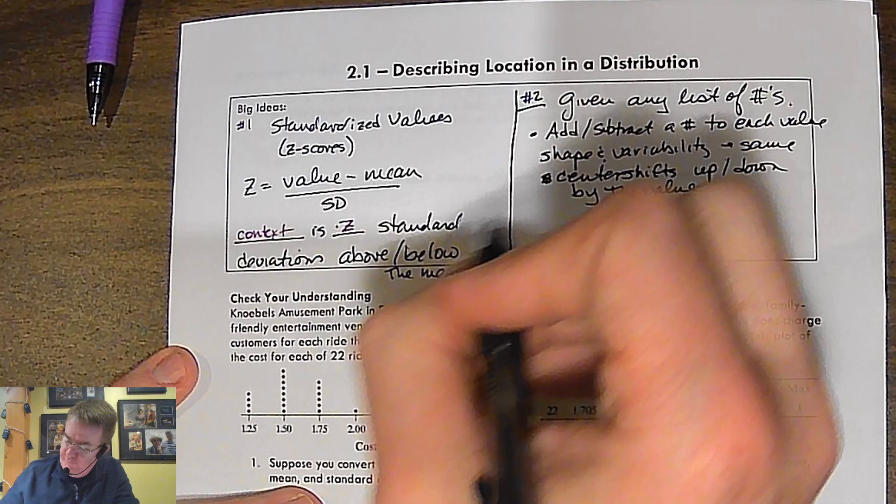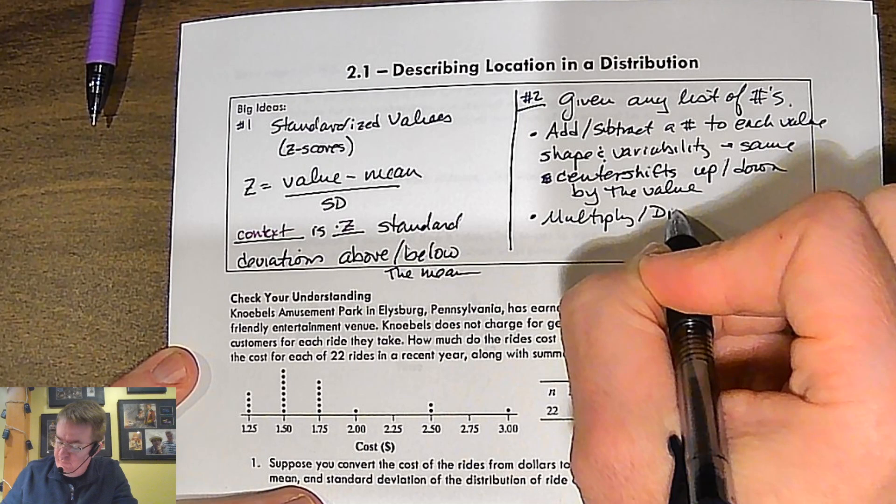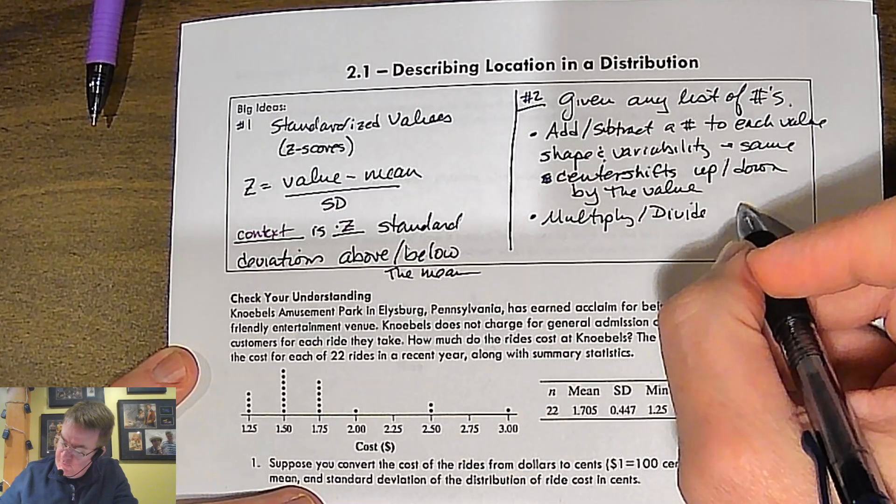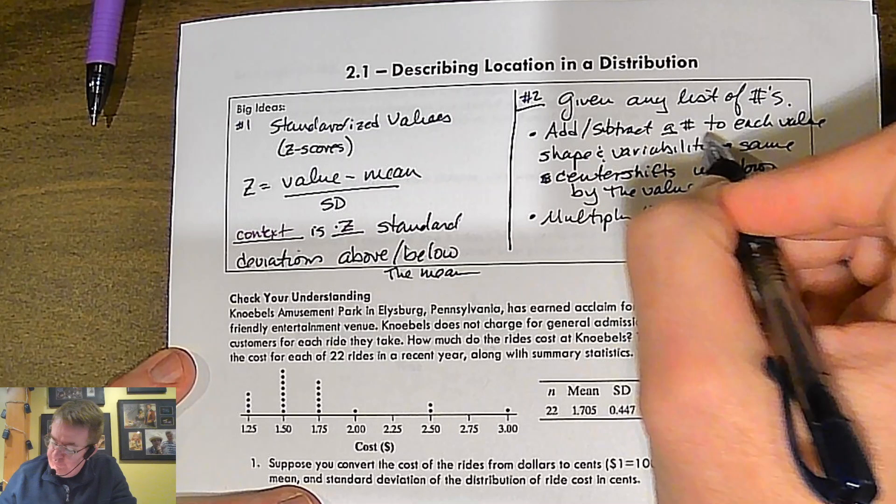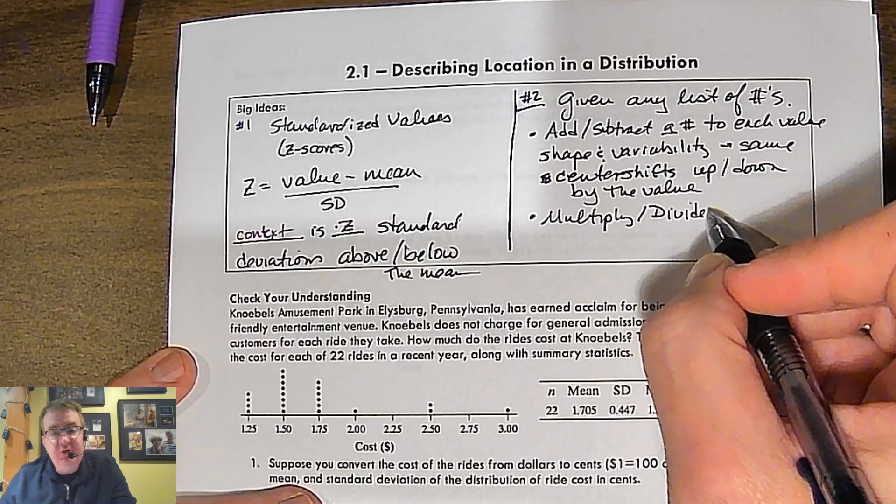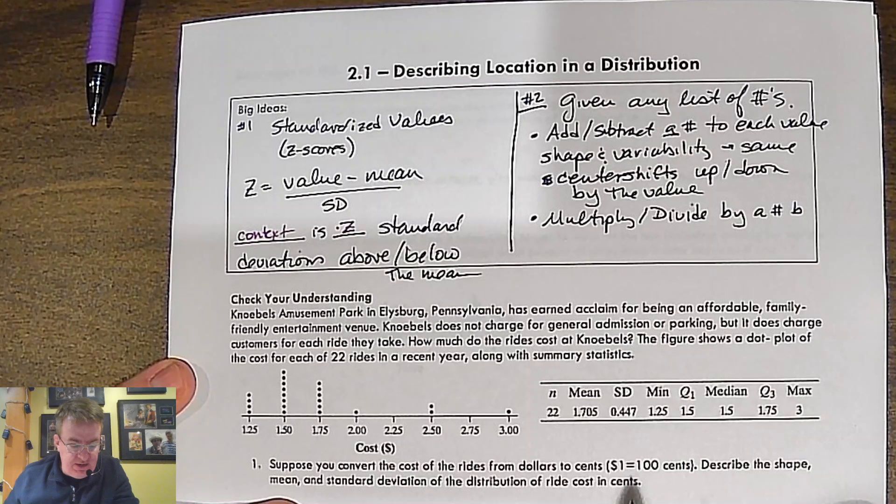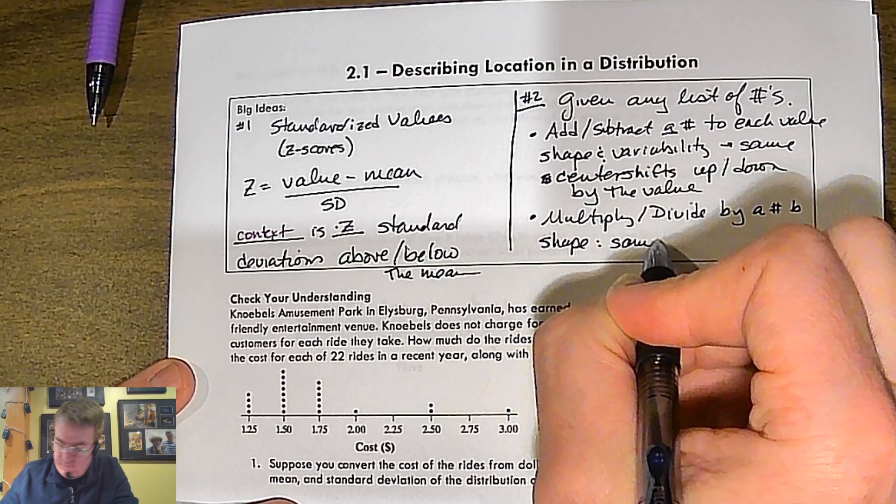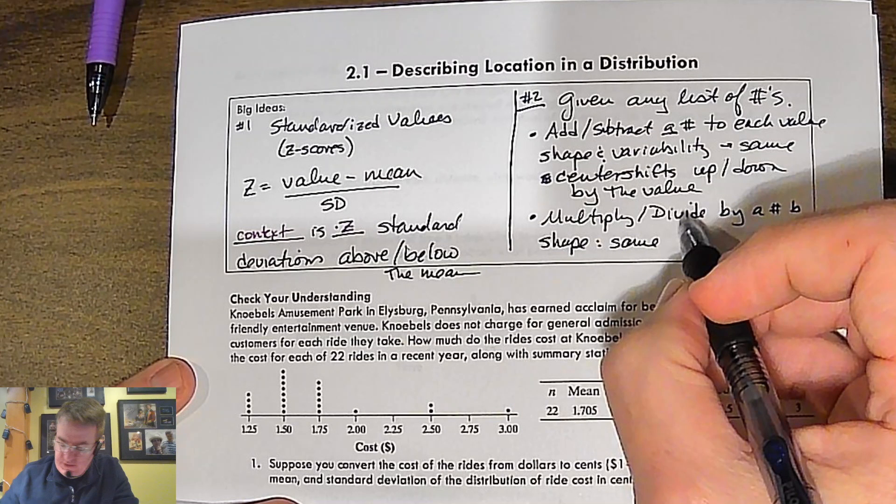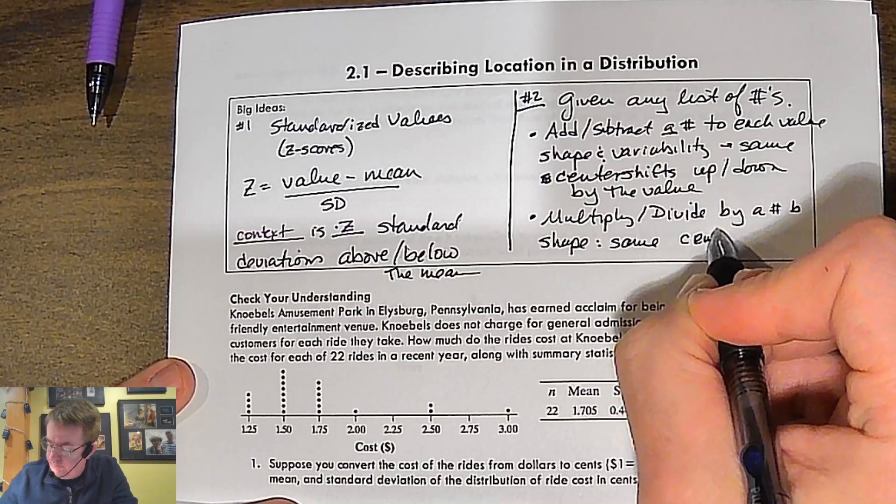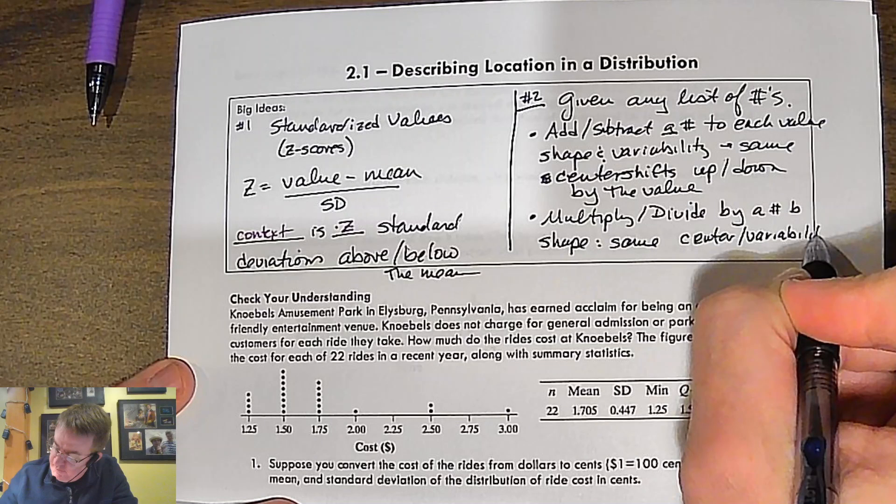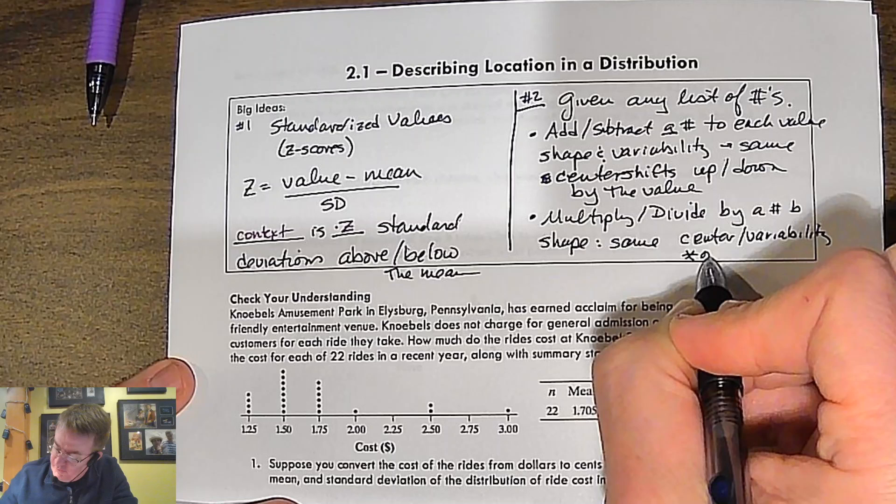If we divide or multiply. Oh, subtract. Not a number. This is the number A. So multiply. This is why you should always look at your notes before you go through and teach stuff. And I did. I just misread it. So by a number, and we're going to call this number B, the shape stays the same. And then your center and variability is either multiplied or divided by B.